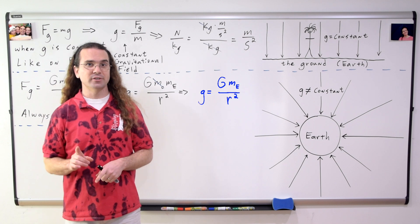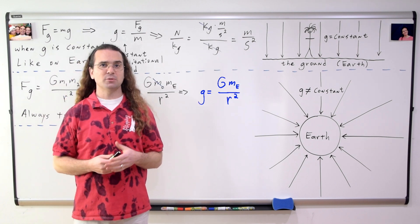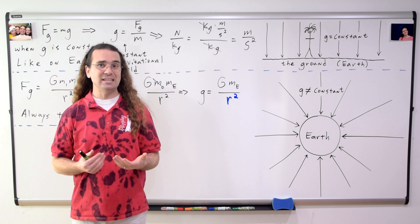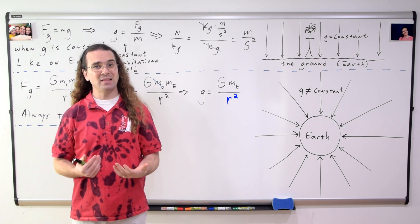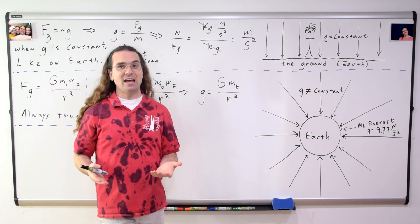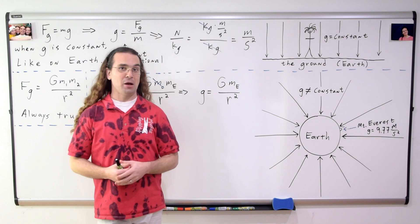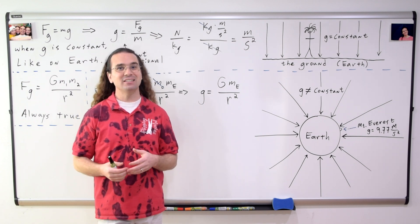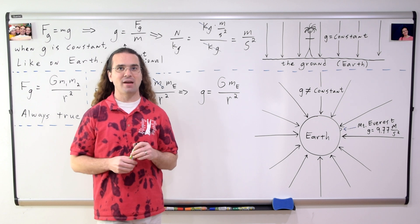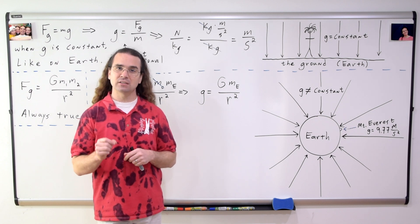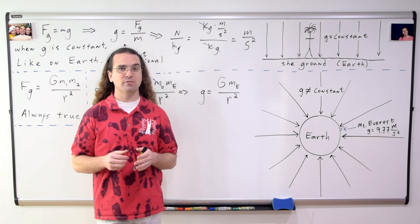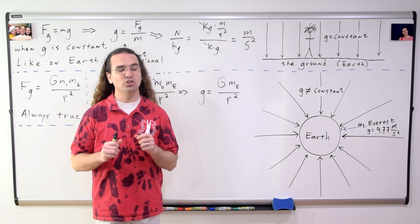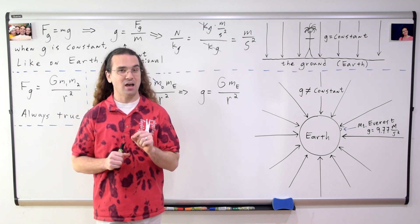Notice, according to the equation, because the gravitational field is proportional to 1 over r squared, the gravitational field decreases as we get farther from the planet. And notice I have added a beautiful drawing of Mount Everest to my Earth drawing. The peak of Mount Everest is a bit farther out in the gravitational field, and therefore the drawn field lines are just a bit farther from one another, and therefore the gravitational field is just a bit weaker at the top of Mount Everest.